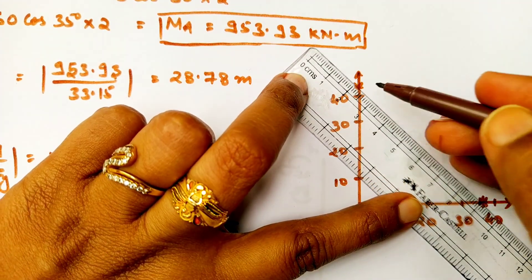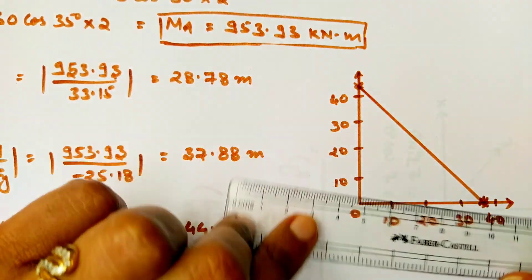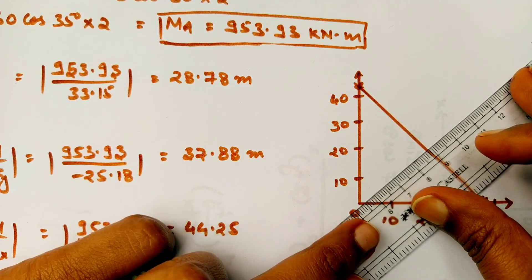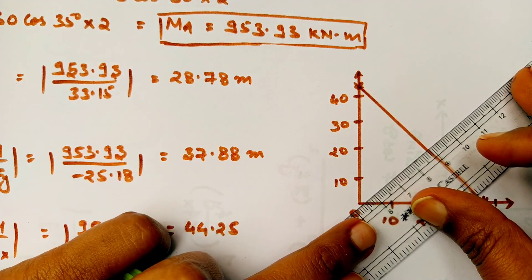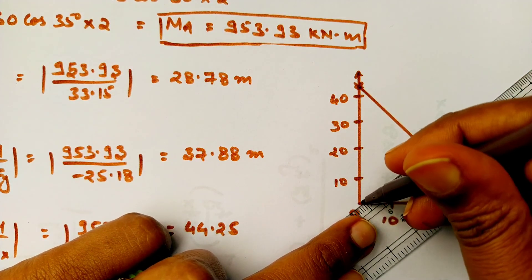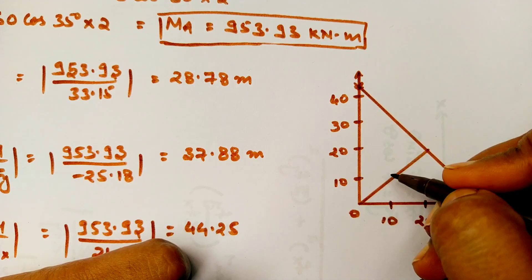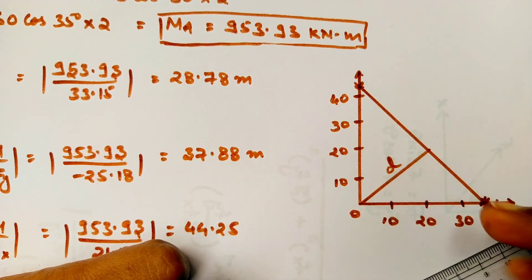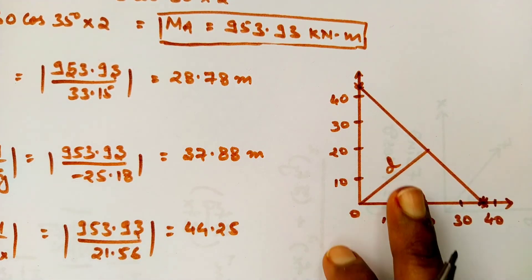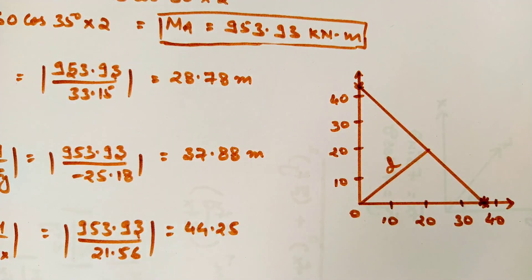What is d? From the origin, the line joining the origin to this intercept is your d. Thank you for watching.